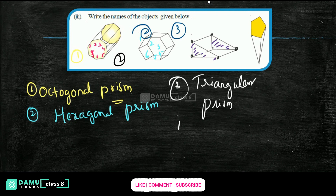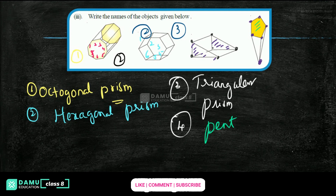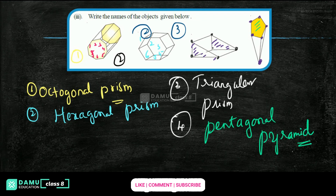Triangular prism. Next, our fourth one: all the points are joined at one vertex — so obviously it is a pyramid. What pyramid is it? I think it is a pentagonal pyramid. Why? Because this base is pentagonal. So the answer is pentagonal pyramid. Thanks for watching, please subscribe and please do leave a review. Watch the other videos also.